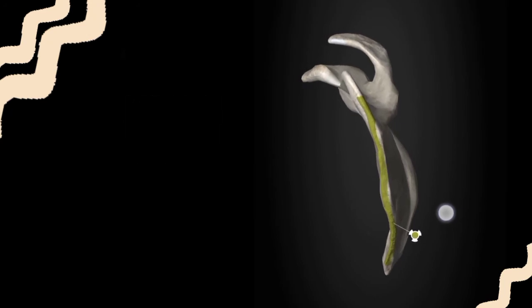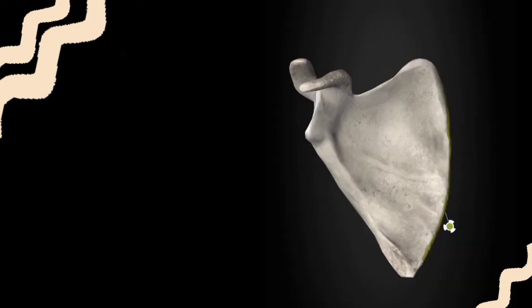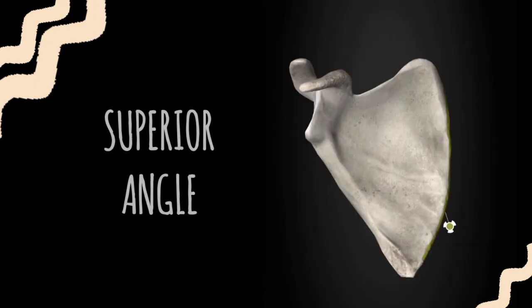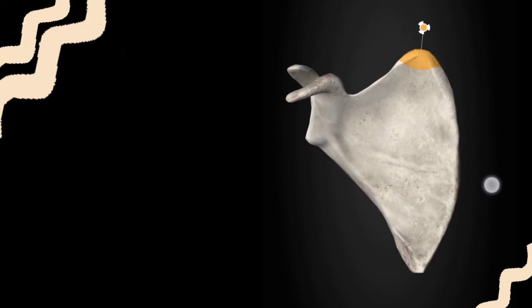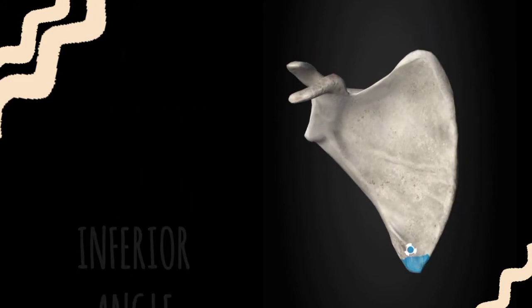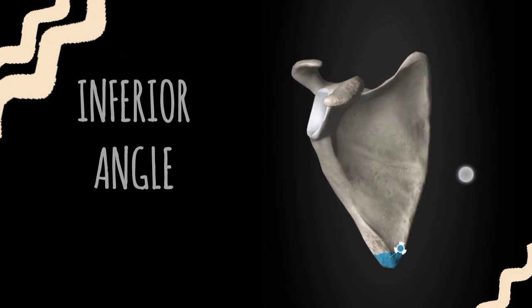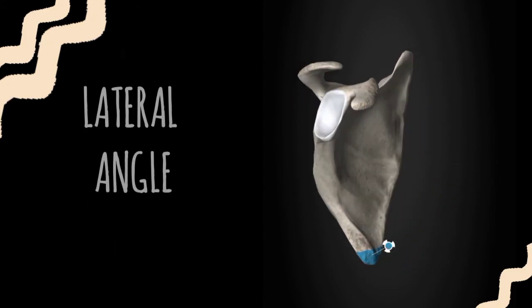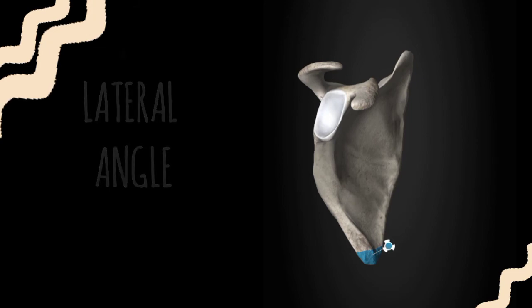The medial border of the scapula has no prominent structures, but it provides origin and insertion to some muscles, which we will discuss later. Regarding the angles of the scapula, there is the superior angle, the inferior angle, and the lateral angle — also called the glenoid angle — which is the part bearing the glenoid cavity.